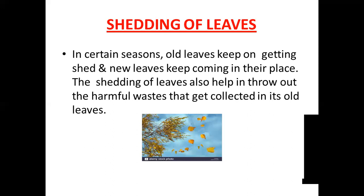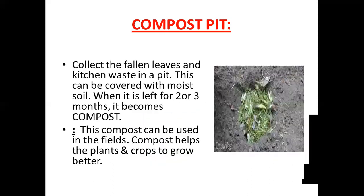Usually this will be observed in the month of February and March in some seasons. What happens to the old leaves when they shed off from the plant? These old leaves, when they shed off from the plants, should be collected. We should collect and dump all the fallen leaves along with our kitchen waste in a pit. All these fallen leaves and the kitchen waste from our house should be collected and kept in a pit.